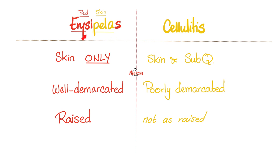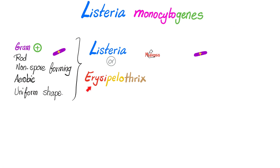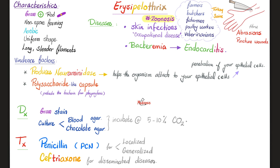Erysipelas, caused by streptococcus pyogenes, is a special form of cellulitis. 'Erysi' means red, and 'pella' means skin. That's why we call the organism Erysipelothrix — because it causes a skin infection that is similar to erysipelas. 'Thrix' means thread-like, that lives in the skin.